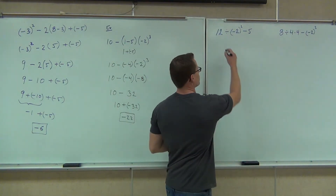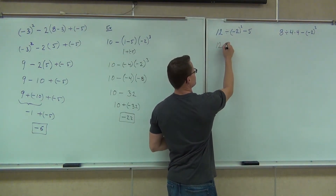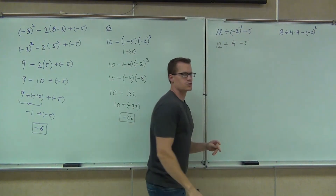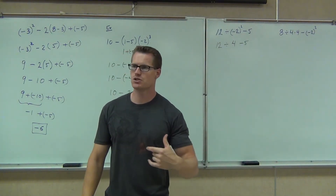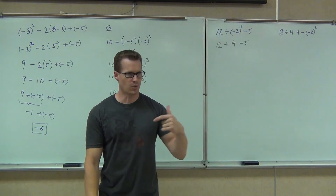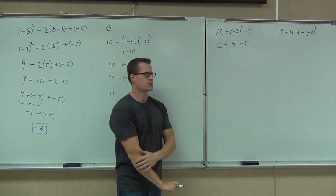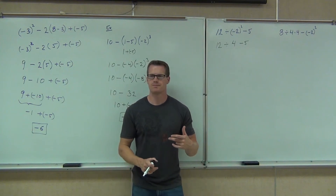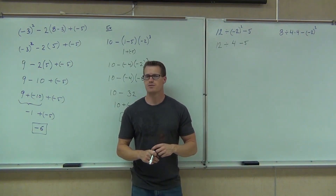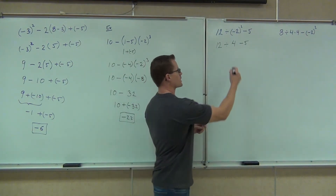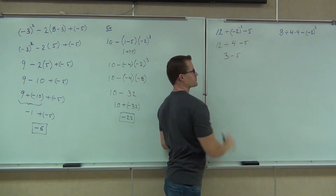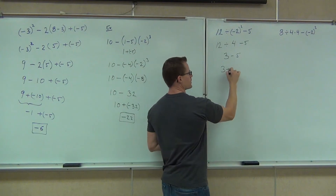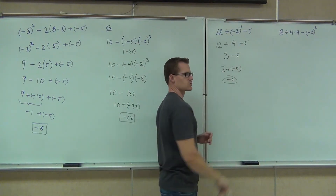You're getting a positive four because what that means is negative two times negative two — it's going with that number. Next up, subtract or divide? Divide. So we're going to get 3 minus 5. Three minus 5 — change the minus to a plus negative. Three plus negative five is negative two. That's our answer.